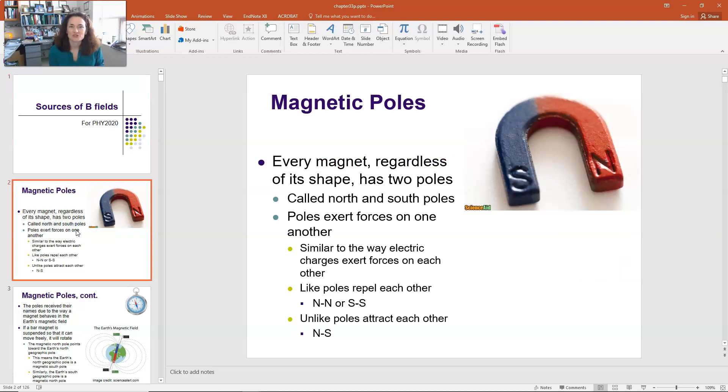So there's two main sources of magnetic fields. These are permanent magnets and moving charge particles or currents. So focusing in on permanent magnets first, you've probably played with these as a kid, right? And so you probably know already that every magnet, regardless of its shape, has two poles. So you can have bar magnets, you can have horseshoe magnets, you can have little disc magnets, but no matter what the shape, you're going to have two poles.